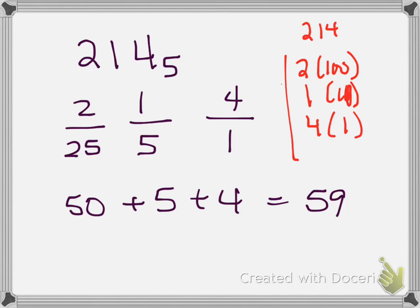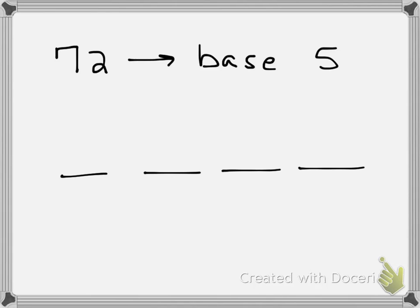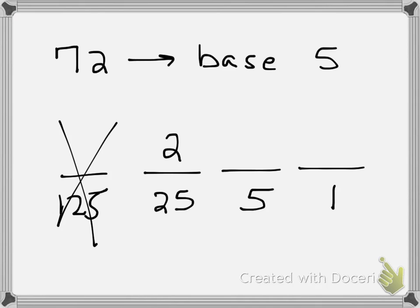So now, what if we had to convert the other way? What if I had the number 72, and I want to convert that to base 5? So I ask myself, 1's, 5's, 25. Well, I'm looking at this. The next one is 125. So I know I can't put 125 into 72. I can put two 25's in there, and that gives me 50. So over here to the side, 72 minus 50 is 22.